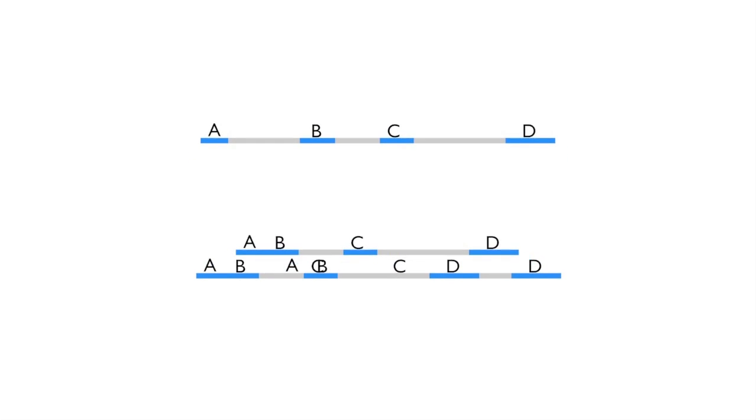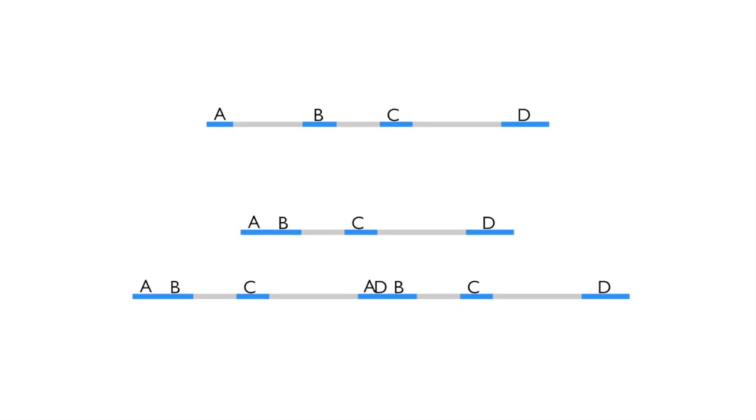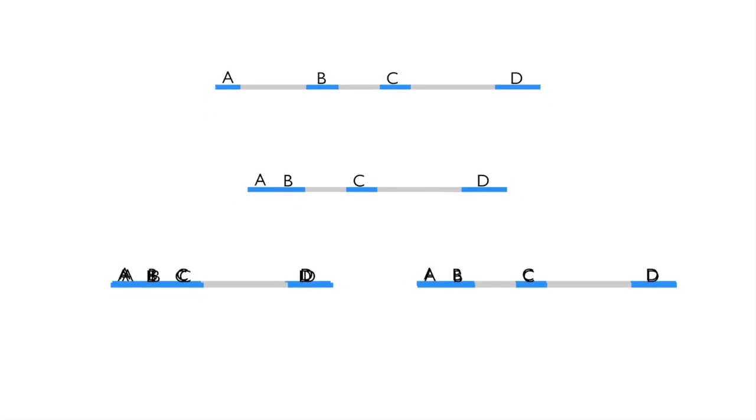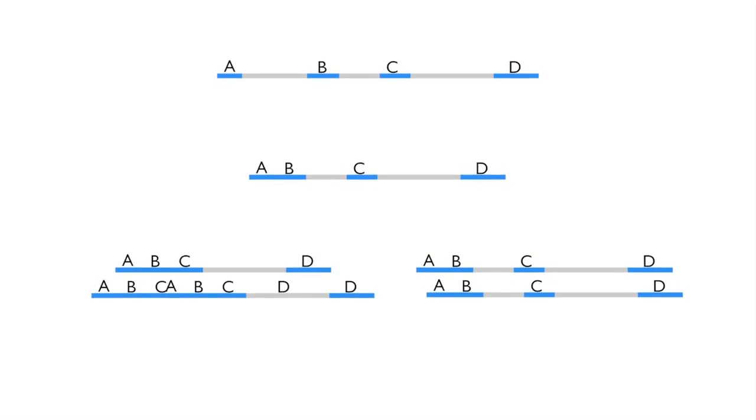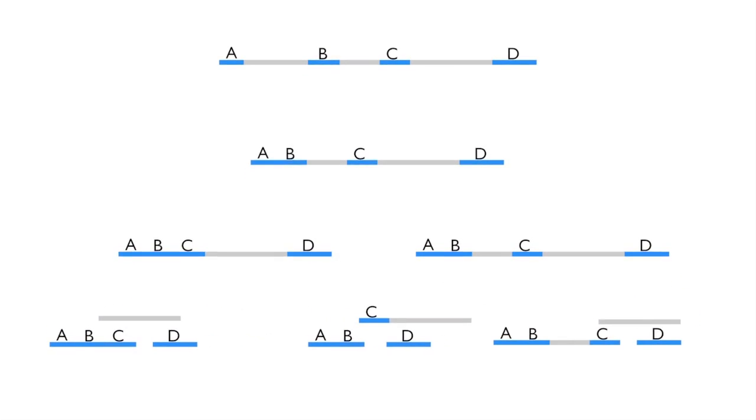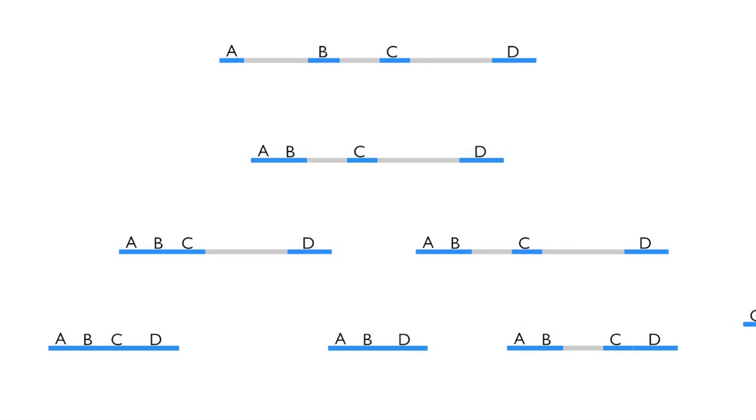At least 75% of genes in higher eukaryotes undergo alternative splicing in which different combinations of exons in a gene are spliced together to produce different mature mRNAs. These alternate splicing reactions introduce an immense source of genetic diversity in the organism.